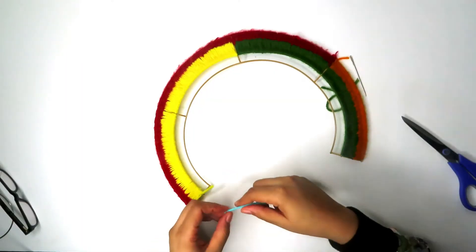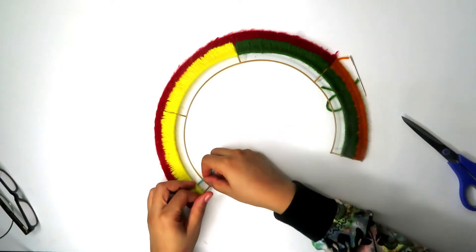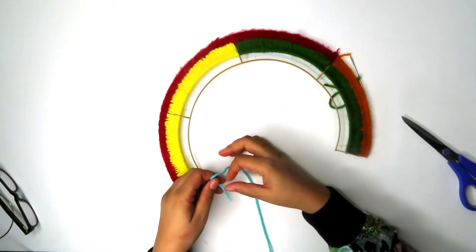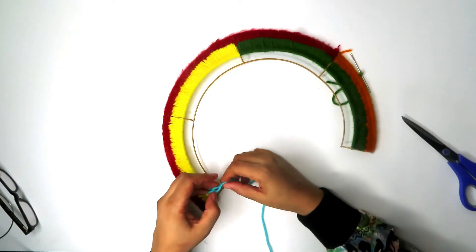Okay, for my last rainbow row, I'm going to fill one section up with blue yarn and I'm going to do the last three sections with the purple yarn.